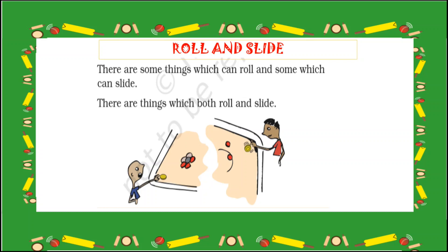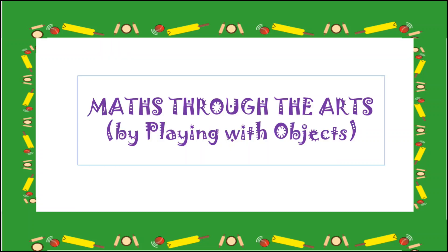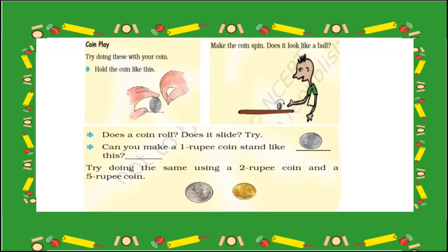For example, a coin. Dear children, based on this topic you have to do some activities. Activity number one: Coin play. Try doing this with your coin — hold the coin like this, make the coin spin. Does it look like a ball? Does the coin roll? Does it slide? Yes, the coin will roll and also slide. Can you make a one rupee coin stand like this? Yes! Try doing the same using a two rupee coin and a five rupee coin.